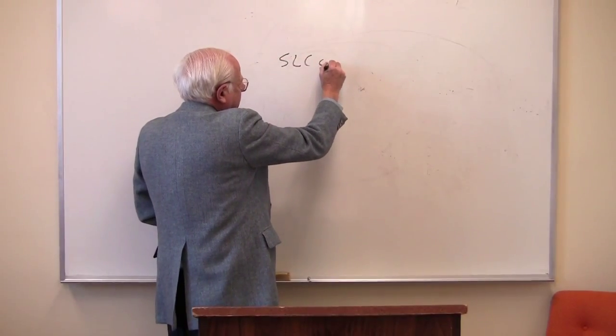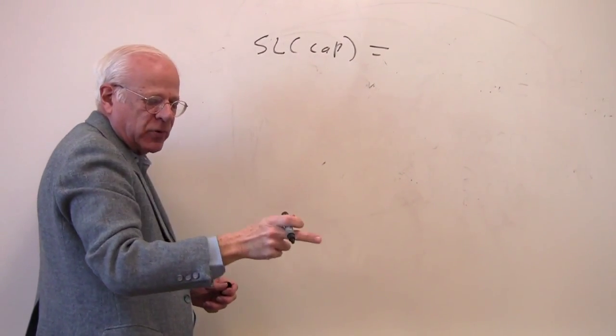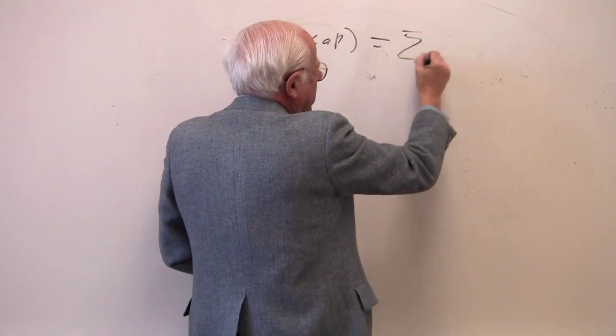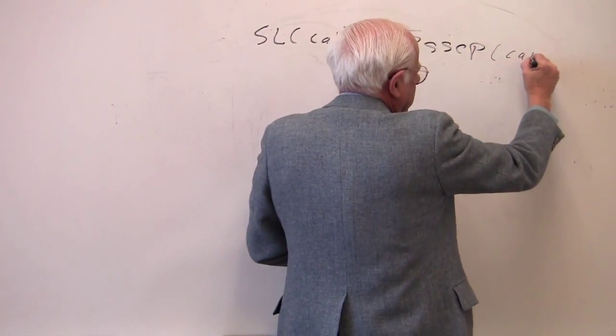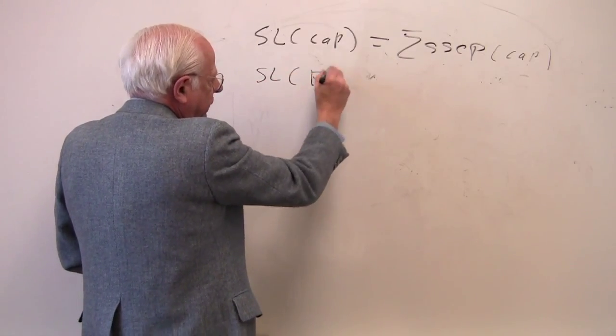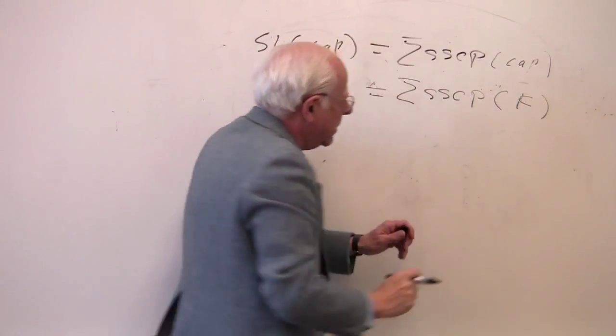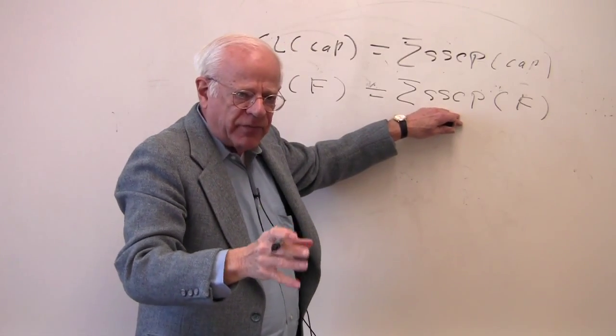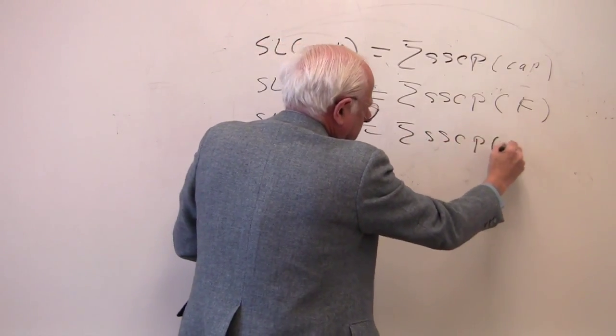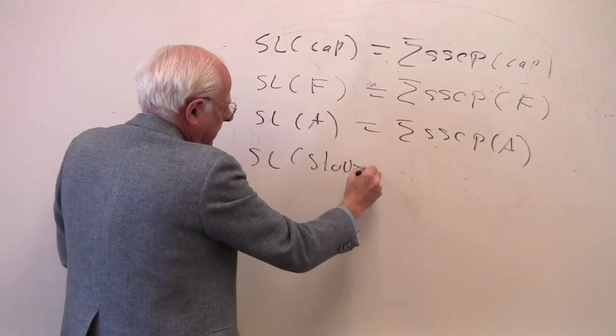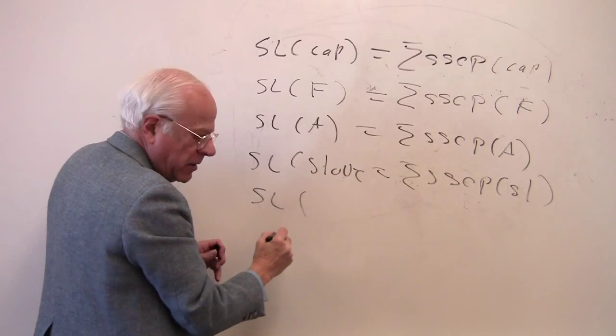We have surplus labor in capitalism. That's the form in which the surplus is produced and appropriated and distributed to all these different subsumed class payments to secure its non-class structure. We also have surplus labor in feudalism, distributed for all the non-class processes that exist in feudalism. The big five: ancient, slave, and communism.